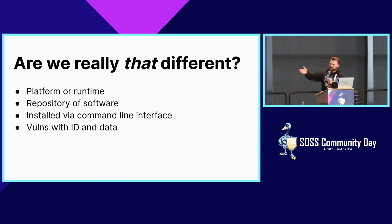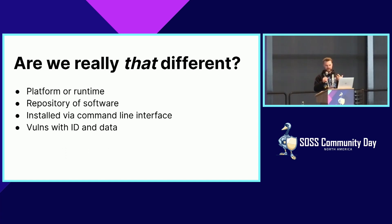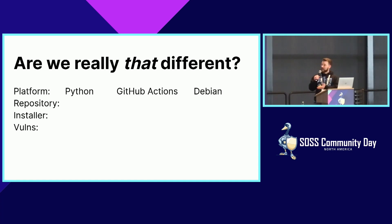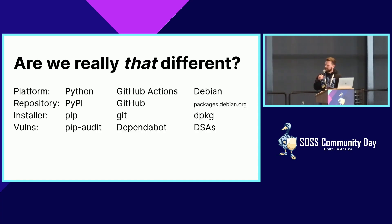Starting off, I see this pattern all over the place, and I'm sure everyone else does too. Every time there's a software ecosystem, it seems to fall into this template: you have some sort of platform or runtime that's centralized to the ecosystem, a repository of software that's optionally installed via command line, and then some way to propagate vulnerabilities with ID information, data, and metadata. Lining up three very different ecosystems — a language ecosystem, a CI workflow system, and an operating system — they still work out in this same pattern.